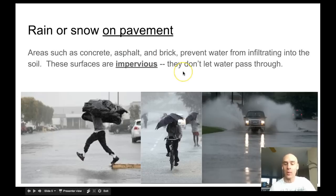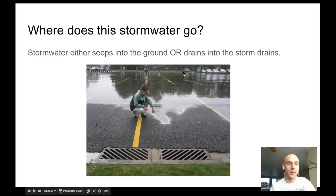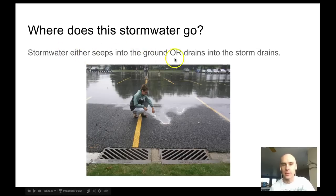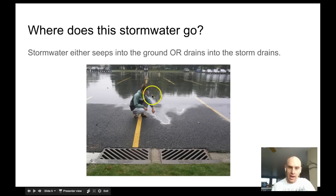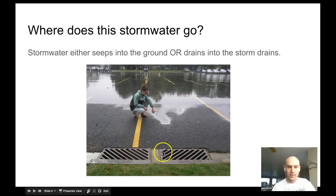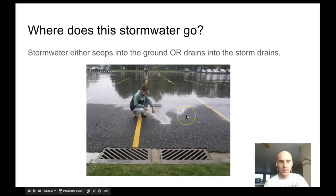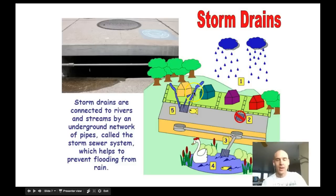Impervious surfaces - areas such as concrete, asphalt, and brick - prevent water from infiltrating into the soil. They're impervious and don't let water pass through. So where does all the stormwater go? It either seeps into the ground or drains into storm drains from the impervious surfaces, unless you have an unlevel surface and then you just have a lake.